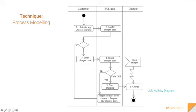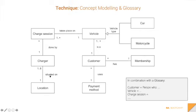Instead of writing use cases as text, you can draw an activity diagram — part of the process modeling technique in the BABOK. It starts with a customer wanting to start charging; the BCL app reacts by asking for the charger code; the customer fills it in; the BCL app knows what to do and starts the charger; it ends when the customer stops the charger. Activity diagrams are part of the UML family, each with its own syntax.